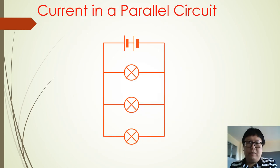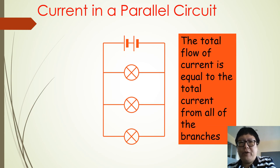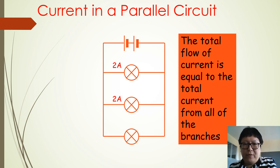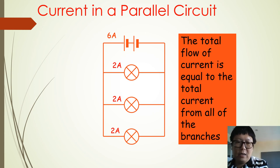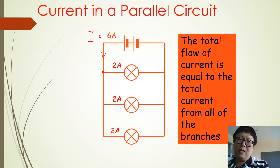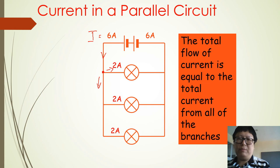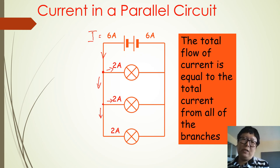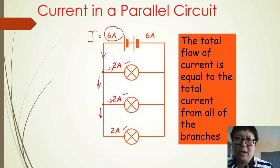In a parallel circuit, the total current is equal to the sum of the currents from all branches. For example, if each branch has two amperes flowing through it and there are three branches, the total current is six amperes. The current flows in, splits at the junctions into the branches, and the total current returning to the electric source is also six amperes.